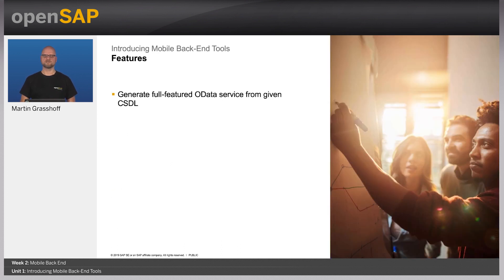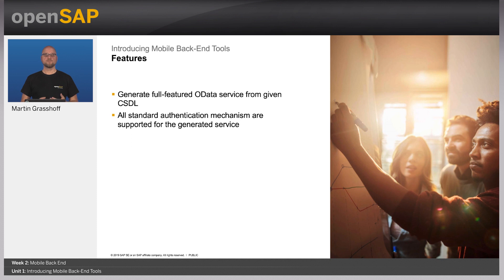There are even more features to point out. First, there's the CSDL — a description language of OData services that describes the service itself, and with that we can generate the service. So it's basically a model-driven development approach. It also includes all the security features you need in your application — in order to secure your backend and have user authentication on top of it, you just decorate the authentication scheme you want, and then you are ready to go.